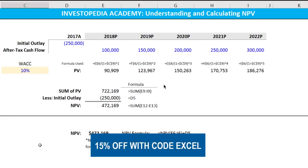Net present value is a core component of capital budgeting and is a comprehensive way to determine whether a proposed project will add value or not. When we think about a capital expenditure or a project, we always have an initial outlay — that's the upfront expense to build the factory, to do the project.